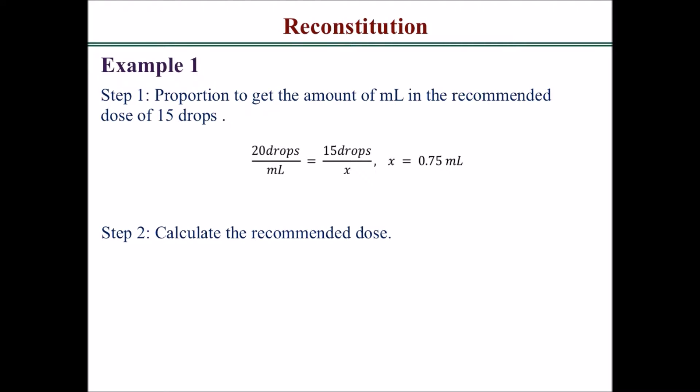Next, calculate the actual recommended dose: 40 milligrams per meter squared times 0.5 meters squared body surface area of the patient, which gives you 20 milligrams.